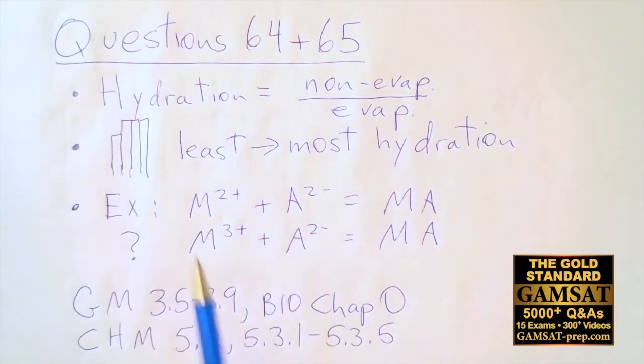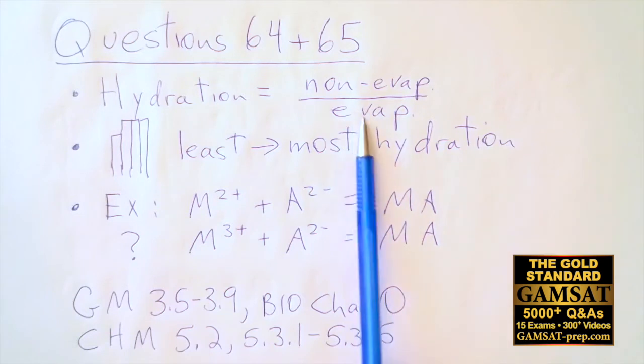They give an example here but we'll discuss that later. First we'll talk about hydration. We're told that hydration is a ratio of the non-evaporable water to the evaporable water, so I just put non-evap over evap. Then we're given a graph and guess what, Acer puts evap over non-evap.